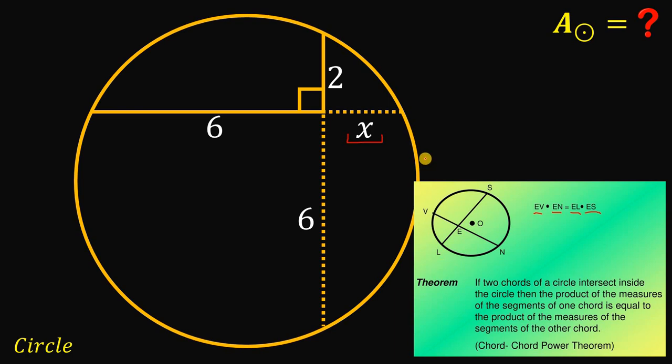So, using this theorem to our given circle, we can say that 6x equals 6 times 2 or 6 multiplied by x must be equal to 6 multiplied by 2. Now, we can divide both sides by 6, so we can cancel out 6 right over here, and we can definitely say that x equals 2.